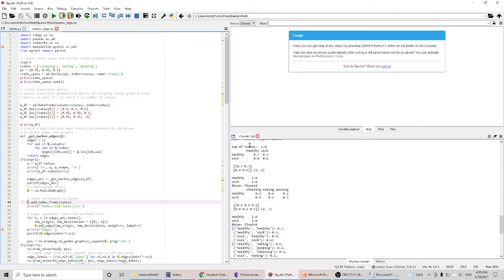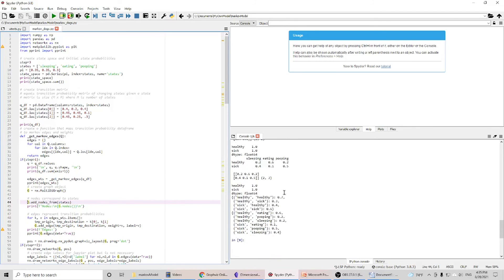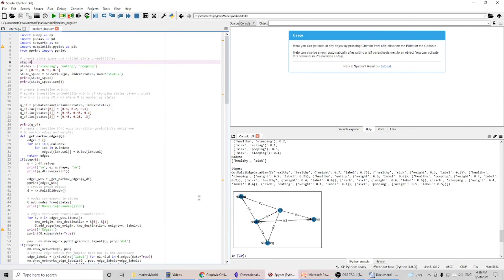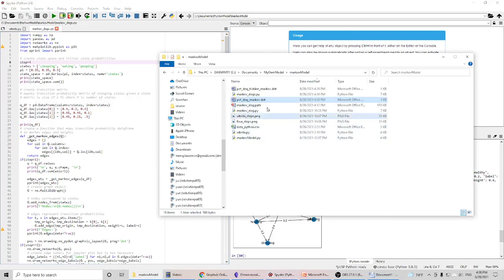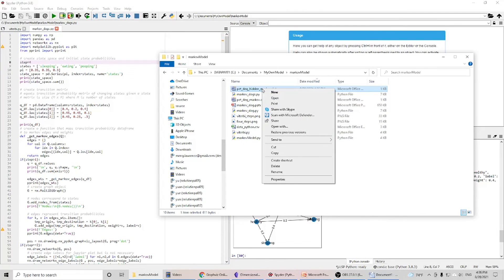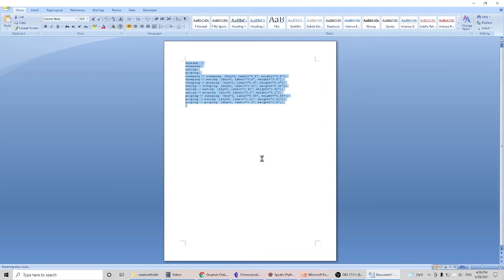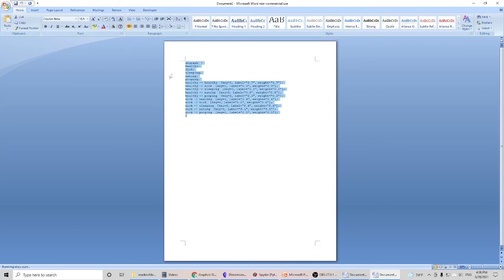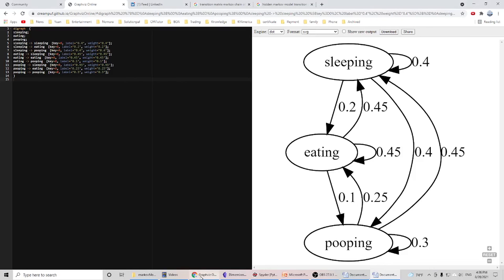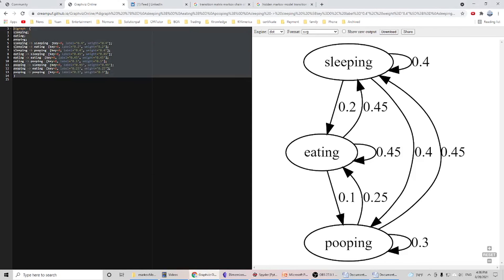Based on the transition matrix and the emission matrix, we can build our model. Something looks like this. Let's take a look at our .dot file, and we can generate this graph again.